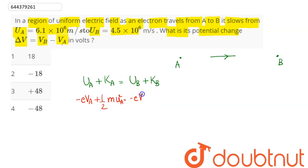This equals potential at point B which is -e × Vb, and kinetic energy at B is ½m × ub². Here ua and ub are the initial and final velocities at A and B.